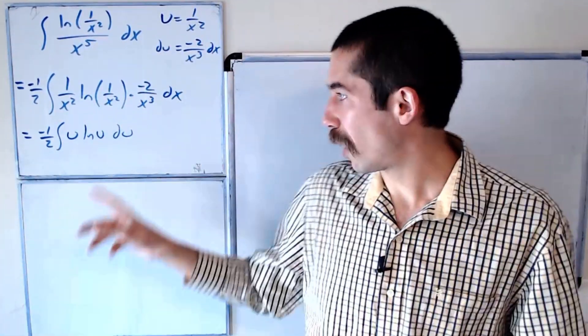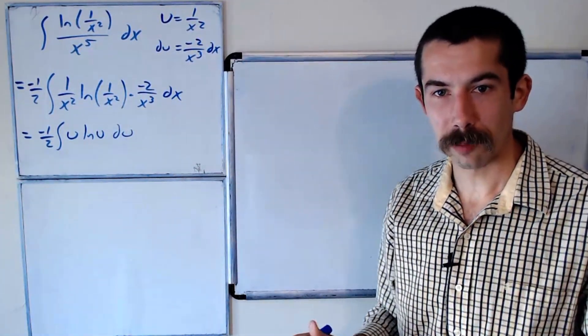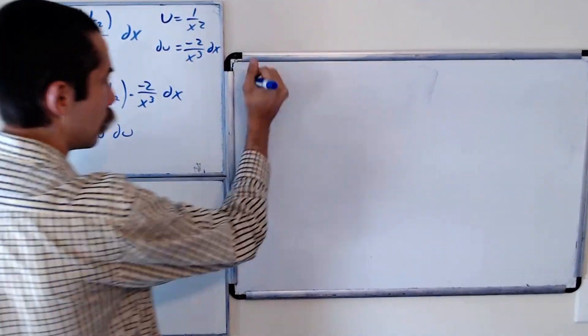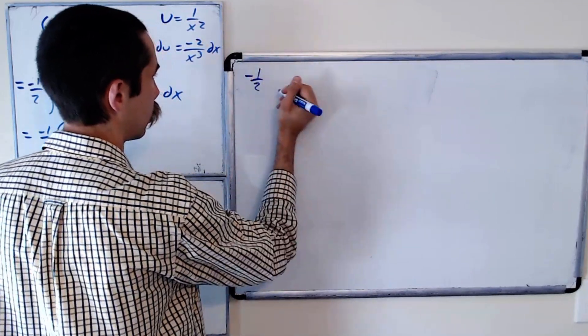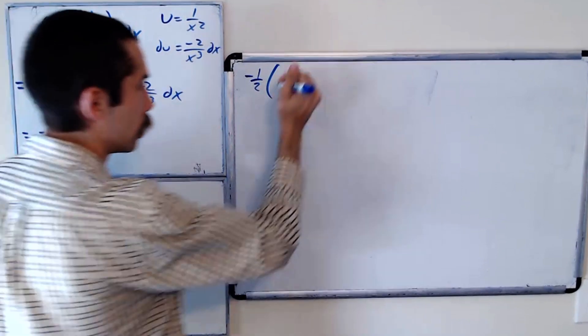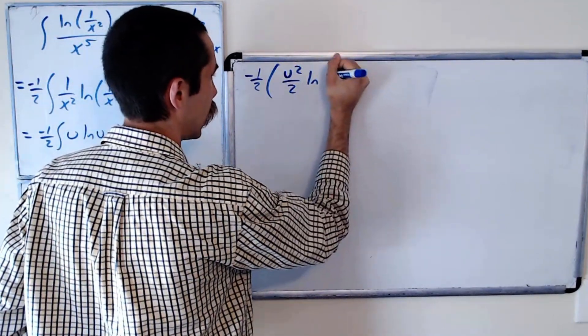And we could evaluate this using integration by parts. So this is equal to, and I'll move up to the big board now, negative 1 half. Integrate u, so that's u squared over 2, keep the natural log the same,